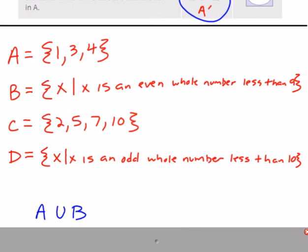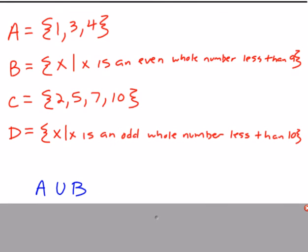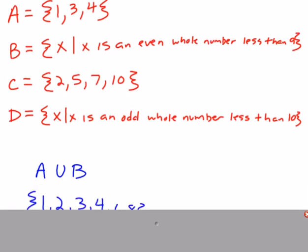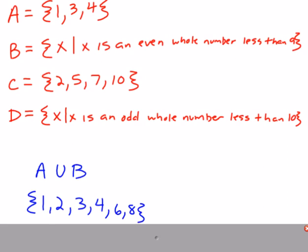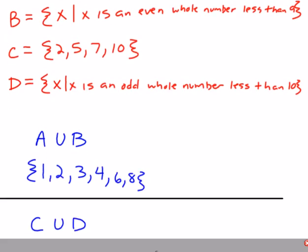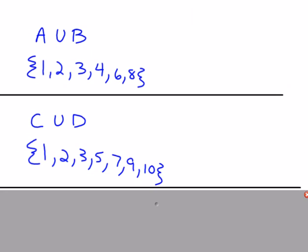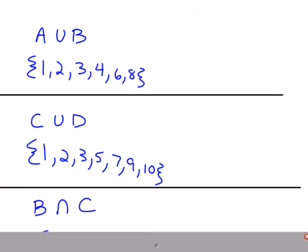For A union B, we list all numbers in A and B — if any repeat, write them once. A is {1, 3, 4} and B is {2, 4, 6, 8}, so A union B is {1, 2, 3, 4, 6, 8}. For C union D, combining {2, 5, 7, 10} and {1, 3, 5, 7, 9} gives {1, 2, 3, 5, 7, 9, 10}.